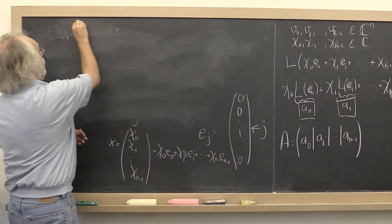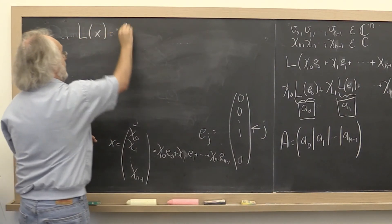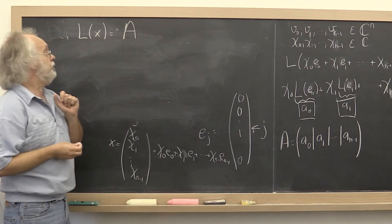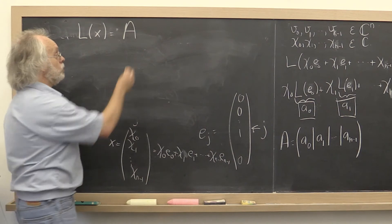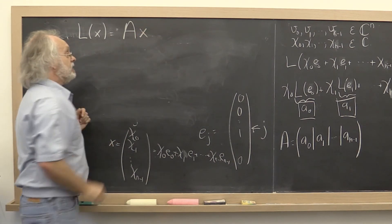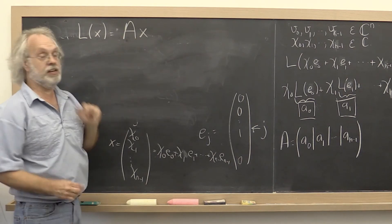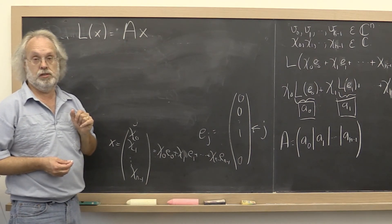If we now want to evaluate L of x, we can instead utilize A and our knowledge about the coefficients of x, and we're going to write that as Ax. And we're going to say that is a matrix times a vector multiplication.